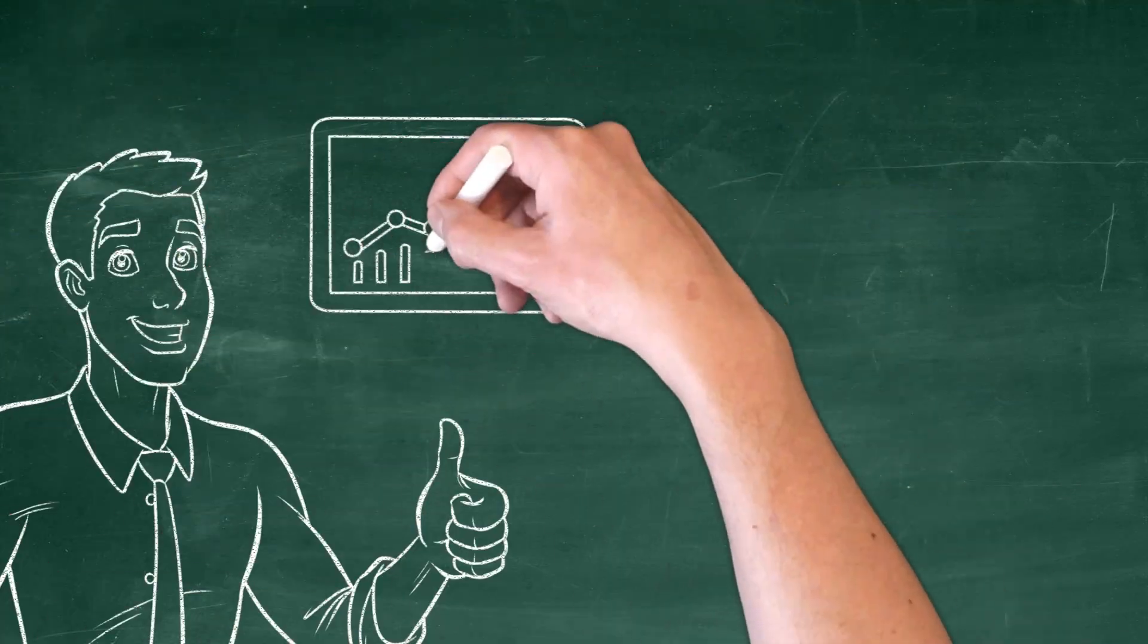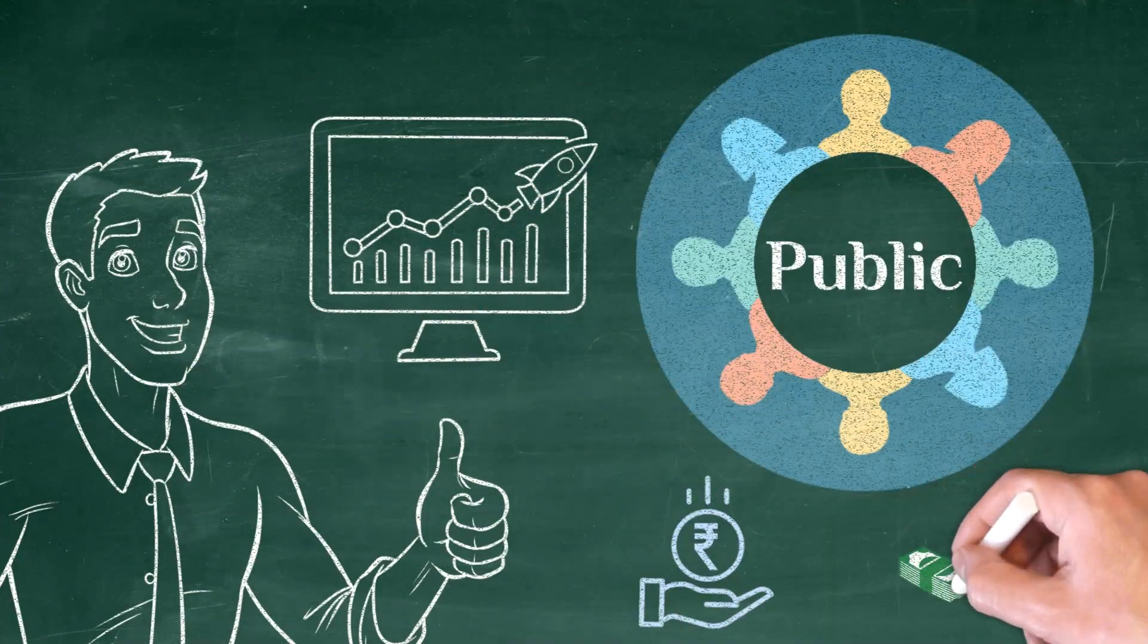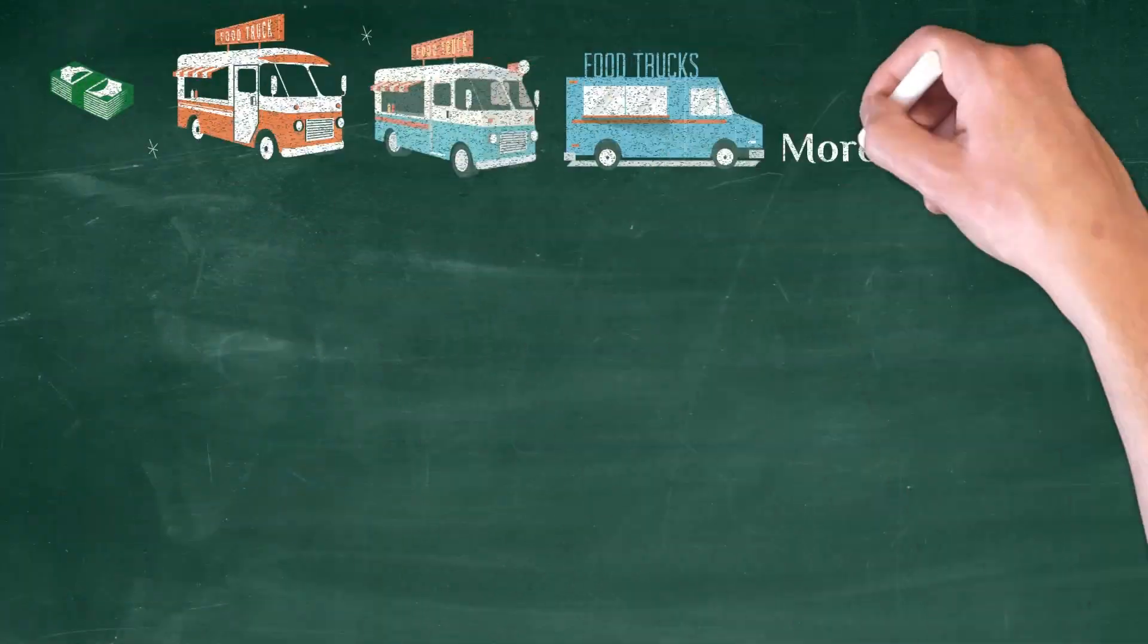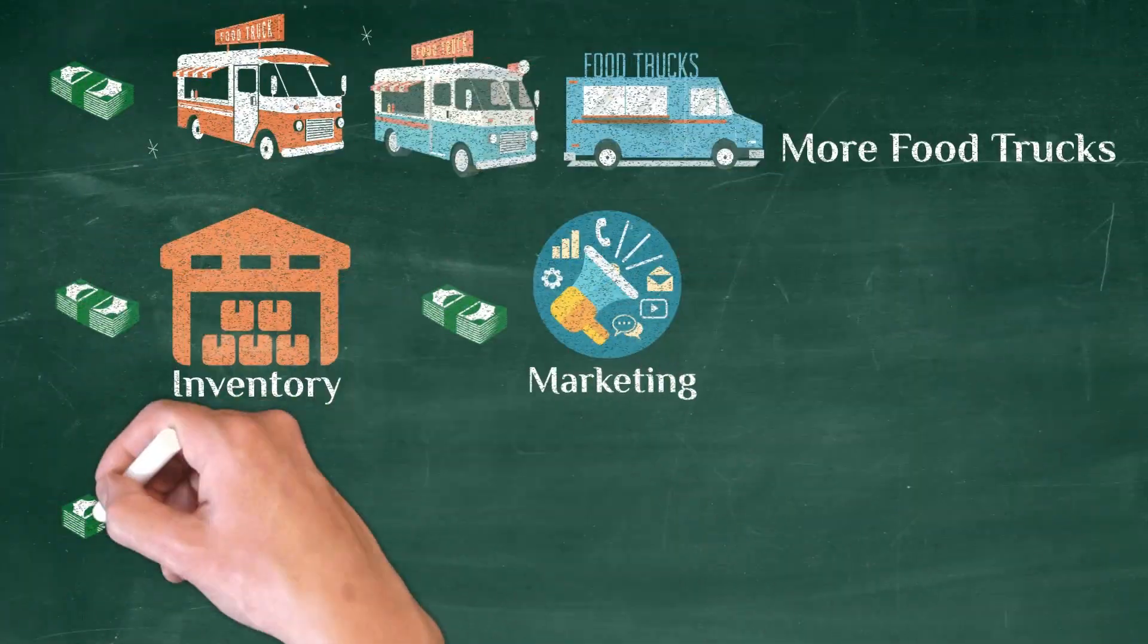To do so, he decides to issue shares to the public to raise the necessary cash he needs to build more trucks, inventory, marketing, and staff.